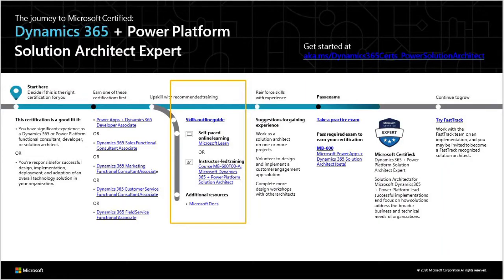After this, you will need to upskill using training resources. The first thing you want to do is download the skills outline guide, which tells you everything that is going to be measured in your MB600 exam so you know what to prepare for. Then you have two different routes for training. The first is self-paced self-study using the free resources on Microsoft Learn, which has pre-made learning paths specifically targeted at the knowledge you'll need for MB600.